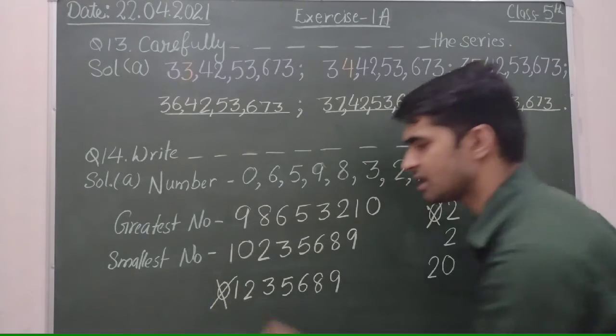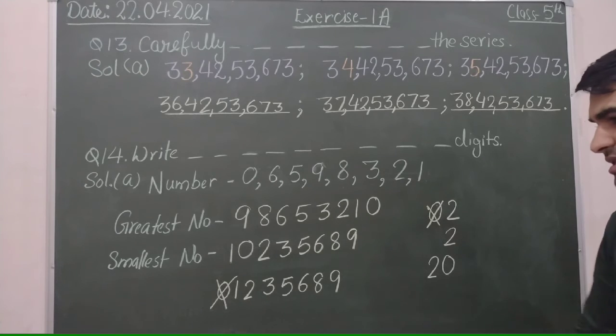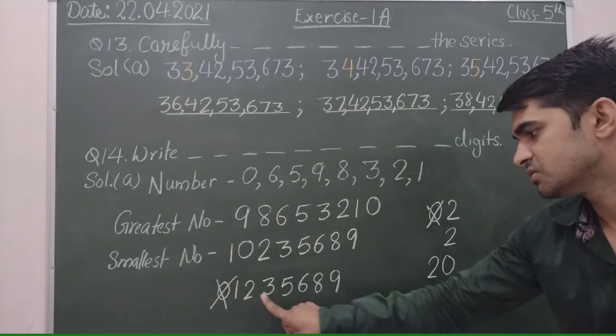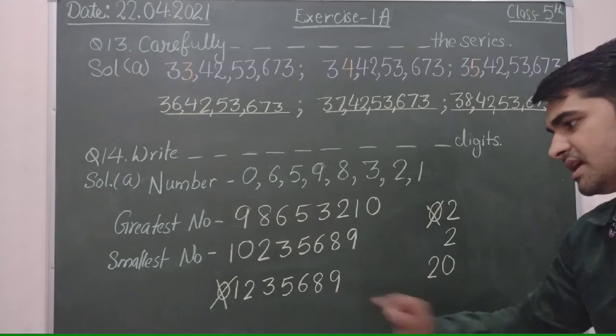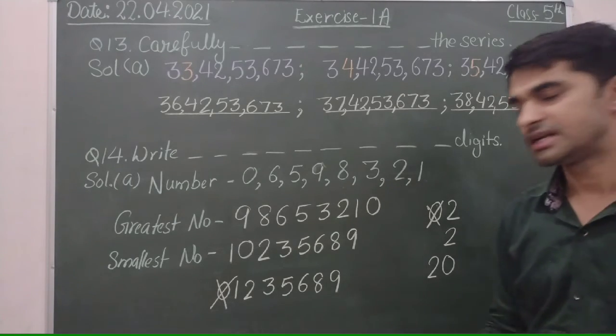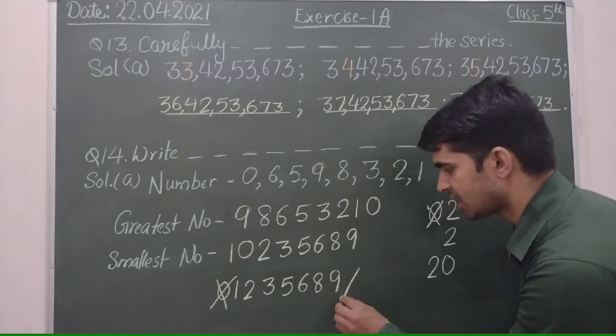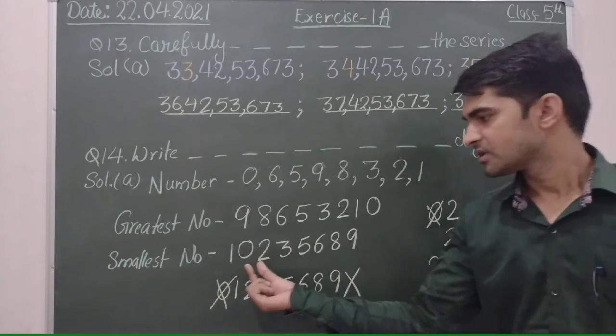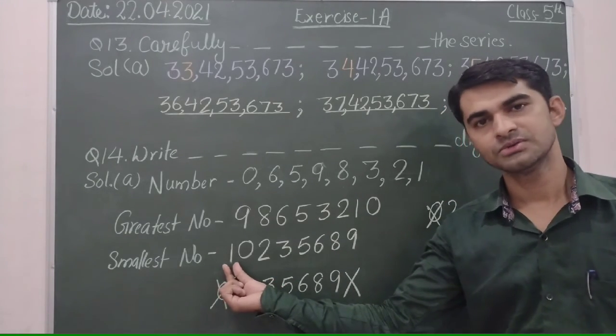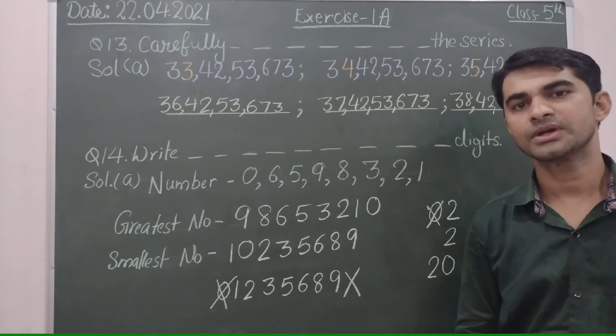It means 0 ka koi mean nahi hota (0 has no meaning). Now how many digits are these? 1, 2, 3, 4, 5, 6, 7 - seven digits. But we needed how many? Eight digits. So this will be WRONG. Any smallest number, just after first digit we will put 0.